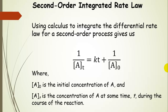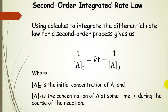Using calculus to integrate the differential rate law for a second order process gives us this equation: one over the concentration of A at some time t is equal to the rate constant k times time plus one over the initial concentration of A. A sub-not is the initial concentration — the same notation as for the first order integrated rate law. A sub-t is the concentration of A at some time t during the course of the reaction, and k is the rate constant.